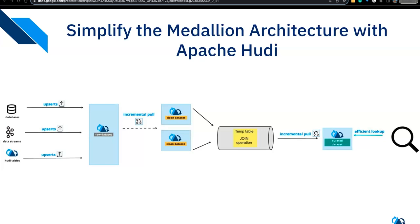So what's an alternative way to build the medallion architecture more efficiently? With Apache Hudi, you'll insert, upsert, or bulk load data into the raw data zone. Hudi does an incremental pull — grabbing just the changes — to update the silver tables. It's less operational than pure Spark because Hudi has its own table services that automatically manage and orchestrate these services. To build a gold table, you create a temp table, perform join operations across silver tables, and do an incremental pull to update the gold fact table.